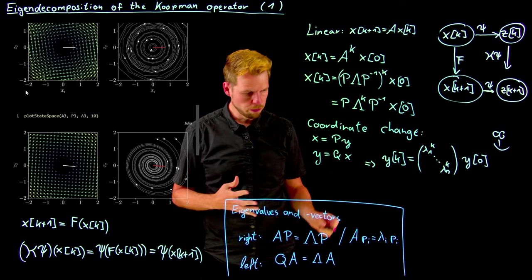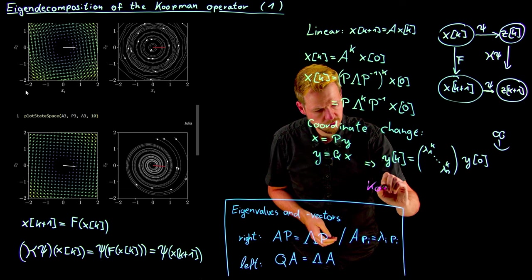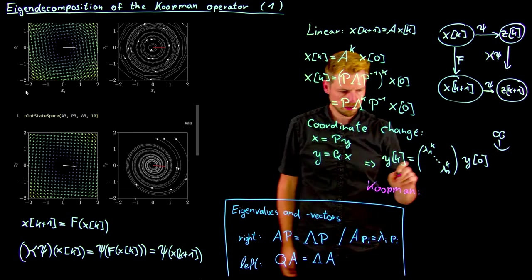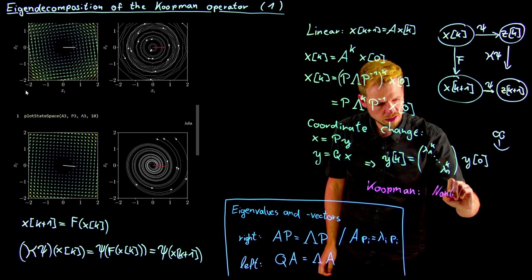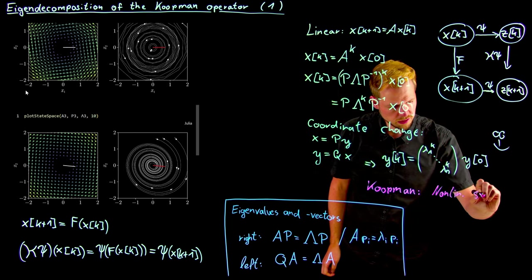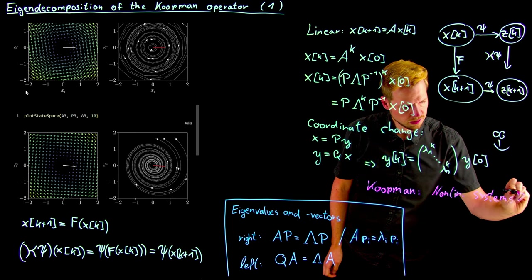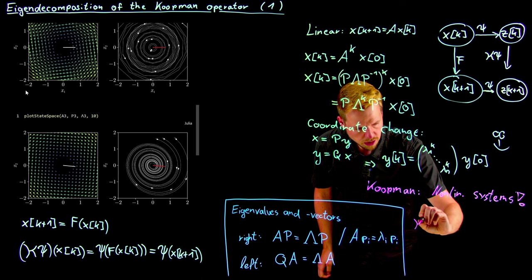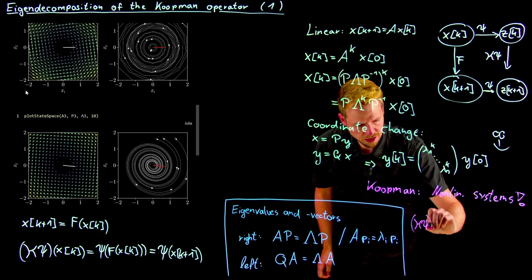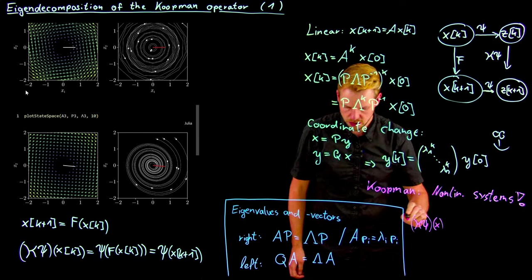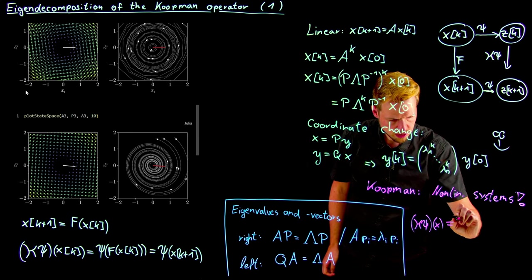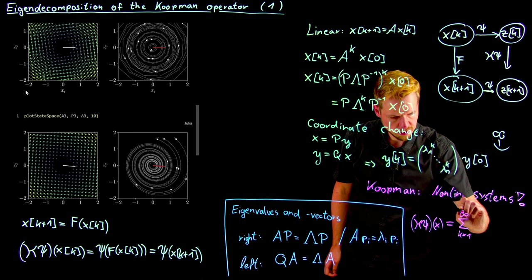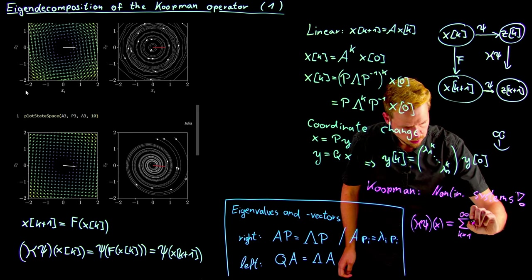And now comes the Koopman perspective. We want to do this for nonlinear systems. So what this means is that we take our operator K, and we decompose it into a sequence of what we call Koopman modes, Koopman eigenvalues and these Koopman eigenfunctions.